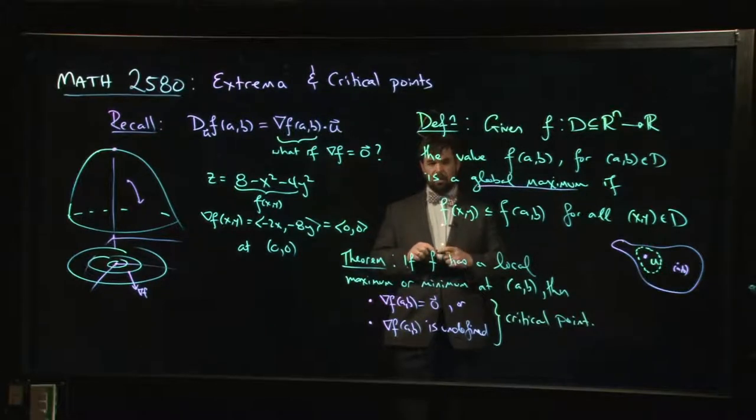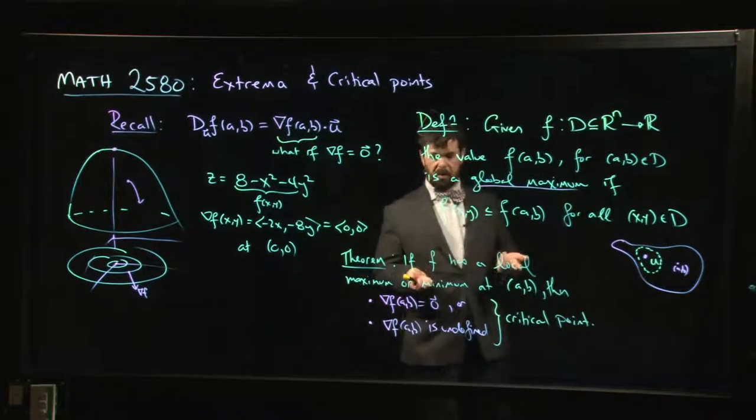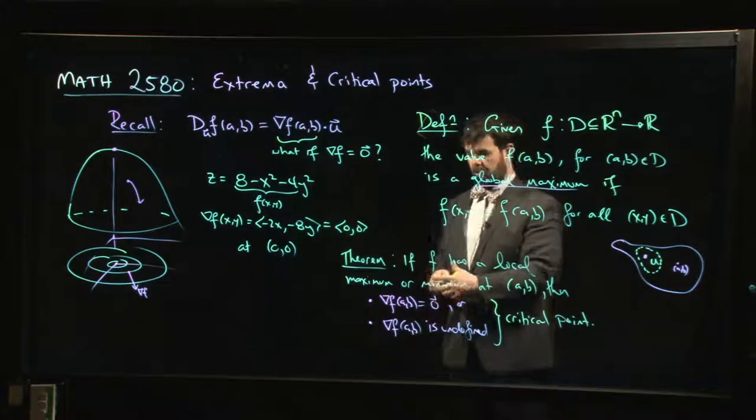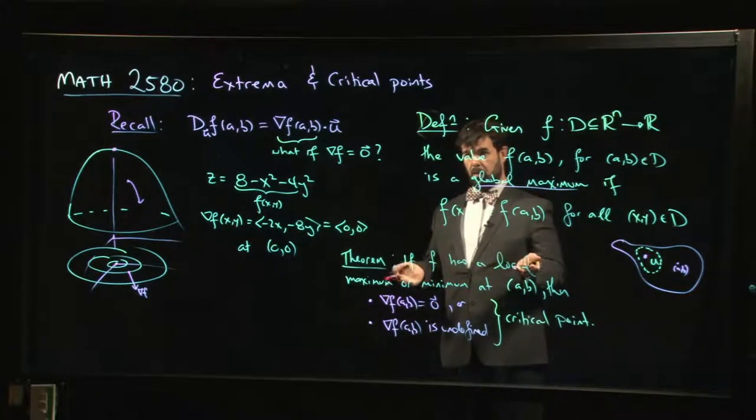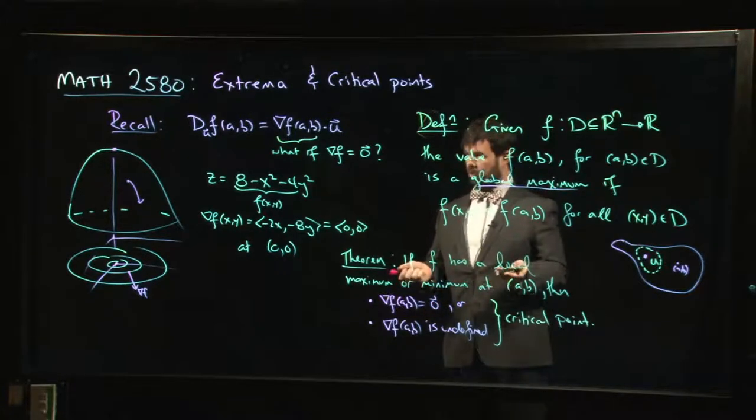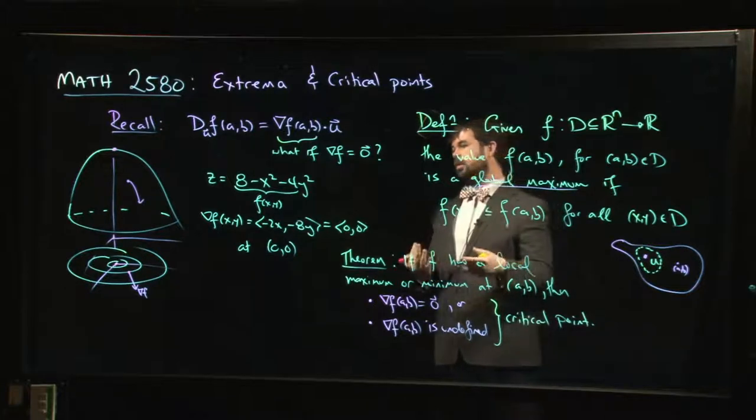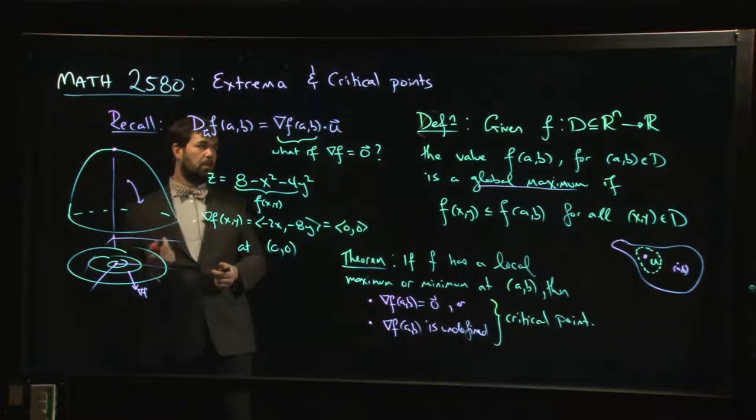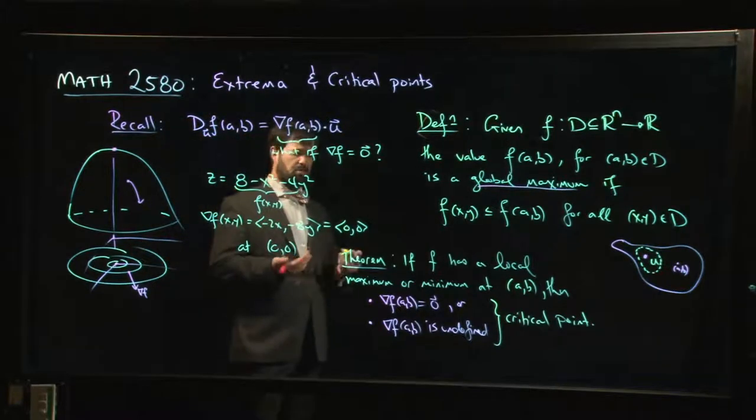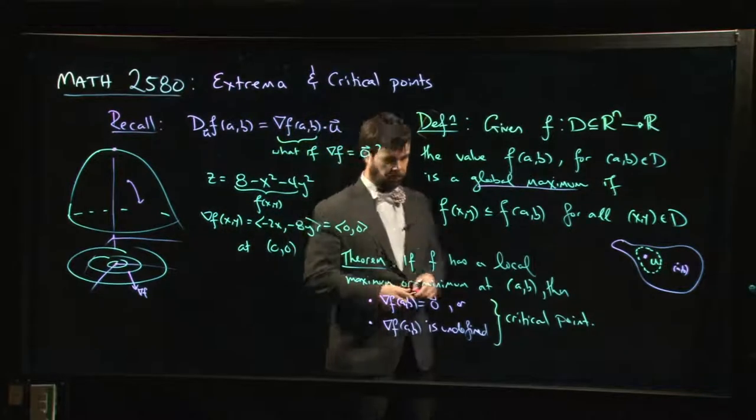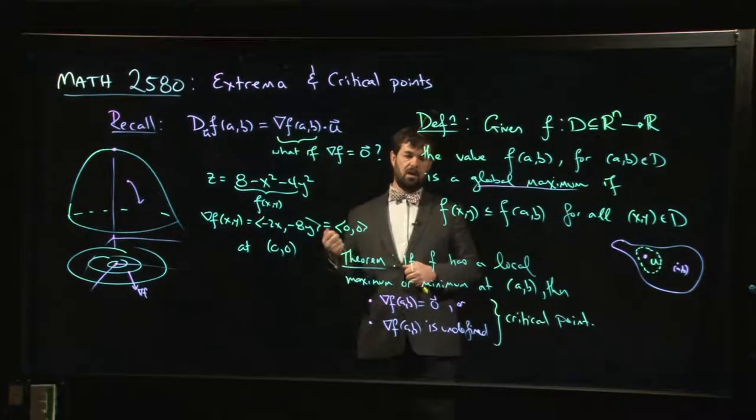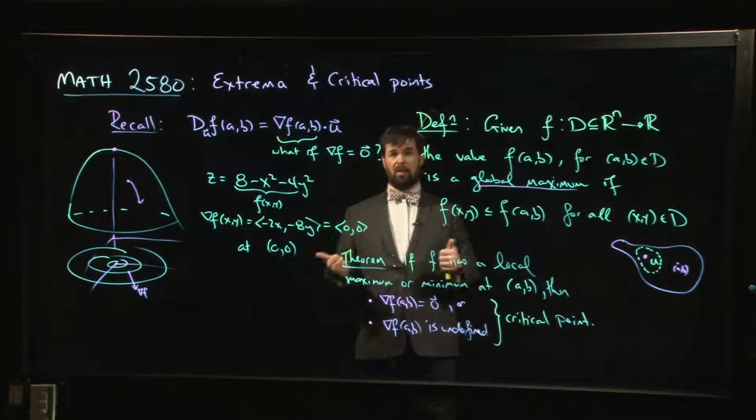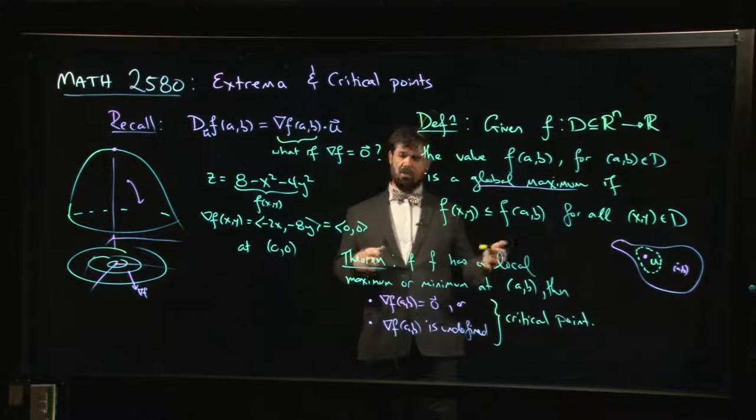Critical point for a function of several variables is just a point where the derivative vanishes or is undefined. And here by derivative, of course, we mean gradient in this context. The main thing that changes as you move from one variable to several variables is that you change what you mean by derivative. So in this case, derivative means gradient. If you're trying to find local max min values for a function, just like in Calc 1, you look for the critical points.